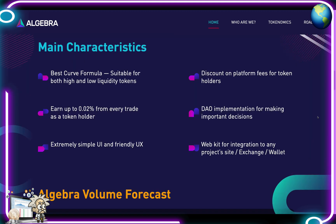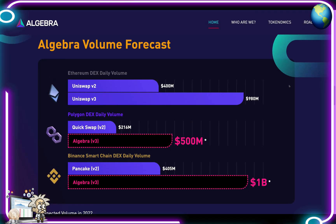Main characteristics: they have the best curve formula suitable for both high and low liquidity tokens. Earn up to 0.02% from every trade as a token holder. They have an extremely simple user interface and friendly UX, discounts on platform fees for token holders, a decentralized autonomous organization implementation for making important decisions, and a WebKit for integration to any project site, exchange, or wallet.